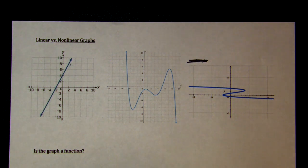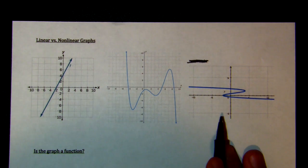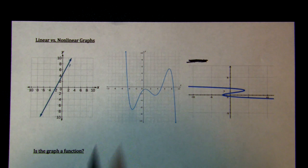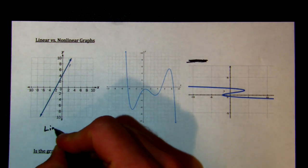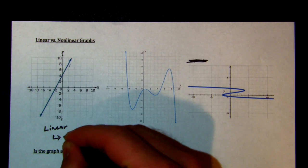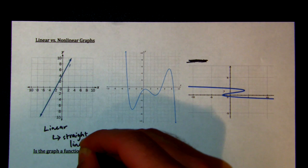We've noticed a ton of mistakes where maybe we're getting what a function is confused with what linear is. But what linear is, is a straight graph — it's a graph that's a straight line. So out of these three, we notice that this one is a perfectly straight line, so we say that is linear. It's only linear if it's a straight line.